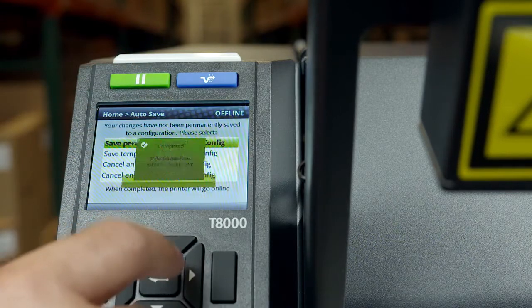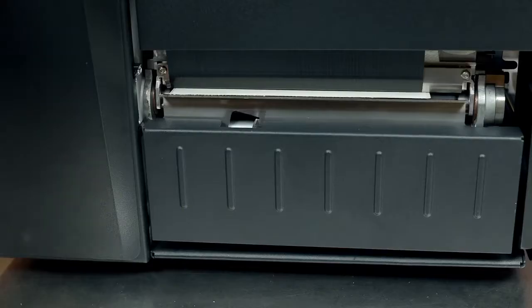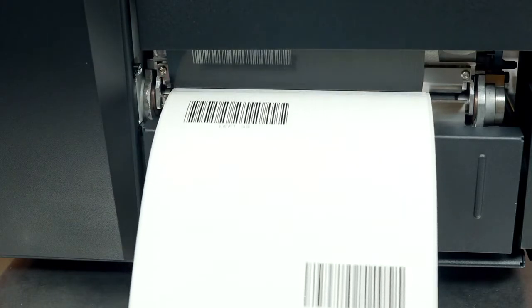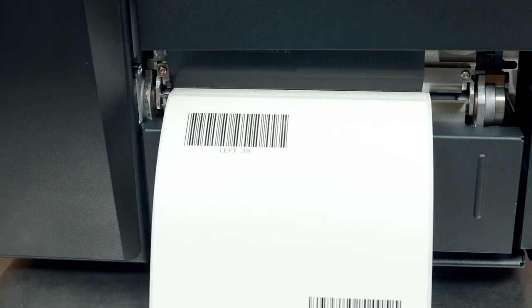A barcode demo can be done to test the validator, confirming that the read light on the validator turns on as the beam moves over the barcodes and successfully reads each.